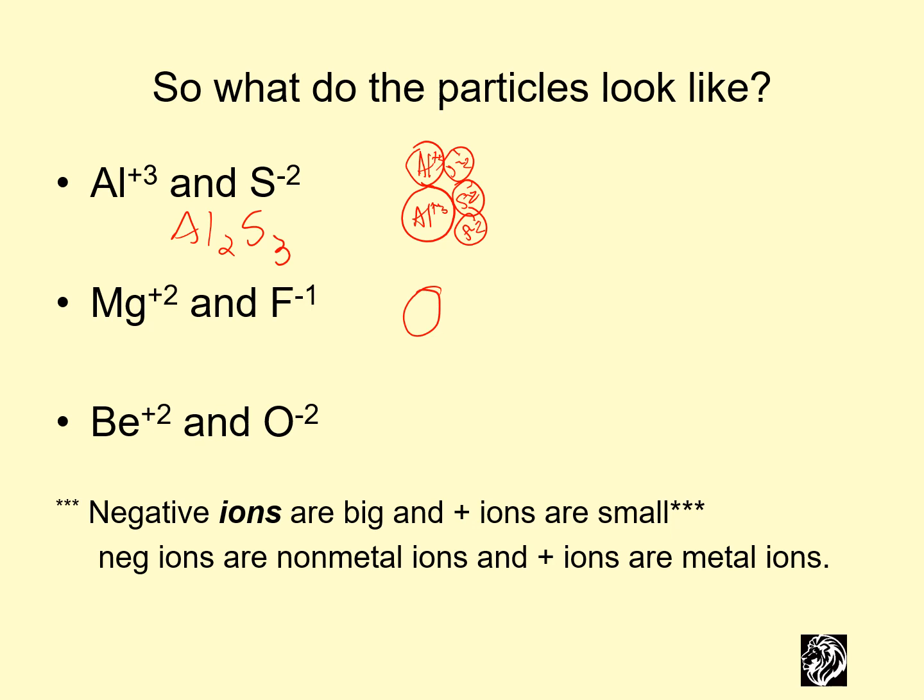We had an Mg and two Fs. So Mg+2, F-, F-. Be and O. Be+2, O-2. And then you'd get another one of these and another one of these, and they'd line up in a crystal.